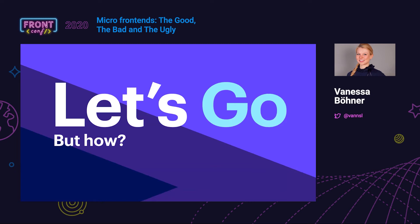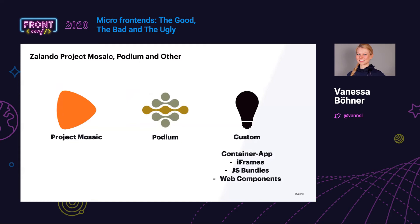Now let me talk about how to implement micro frontends. There are several open source projects — frameworks like Project Mosaic from Zalando or Podium. But if you're starting out, I'd suggest thinking in custom solutions because they are easier to understand and less complex. A custom solution would be a container application using good old iframes. I know we're all afraid of them for good reasons — the height is impossible to change — but they are great for explaining the concept. Iframes are basically the micro frontends of 1990.